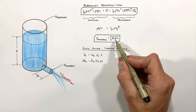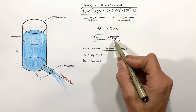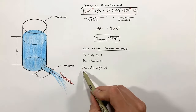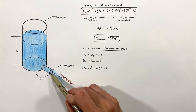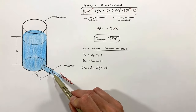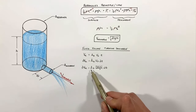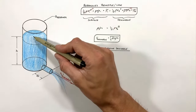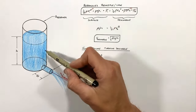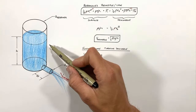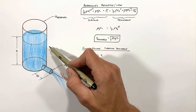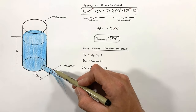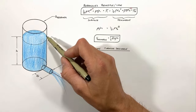Substituting in our value for the velocity at the discharge, this term relates the volume of fluid which is going to exit the discharge in any given instant as a function of the cross-sectional area of the discharge and the height of the fluid within the reservoir. But remember, we're trying to find the time to drain the tank, which means we need to relate the volume of fluid discharged to the change in fluid height within the reservoir.